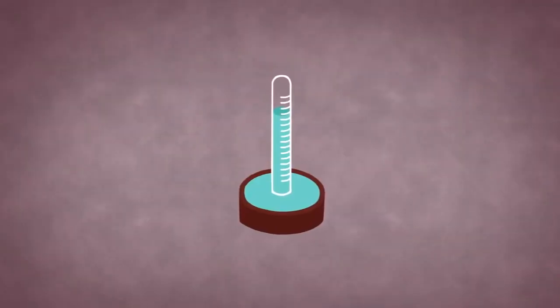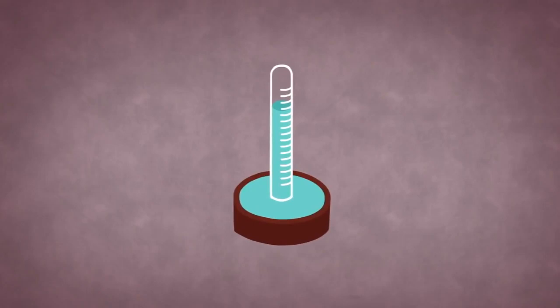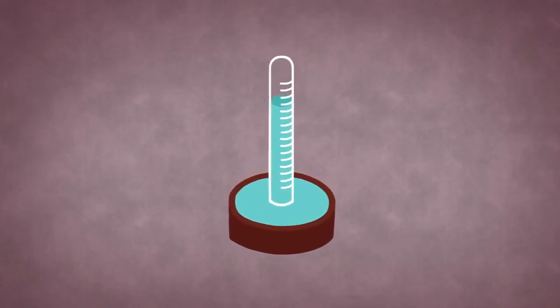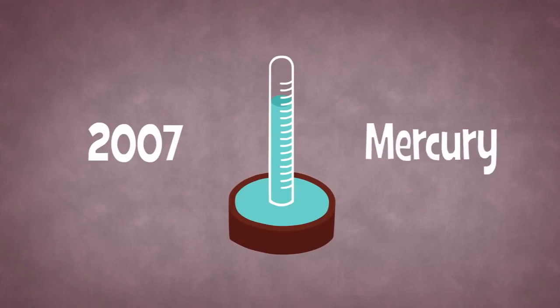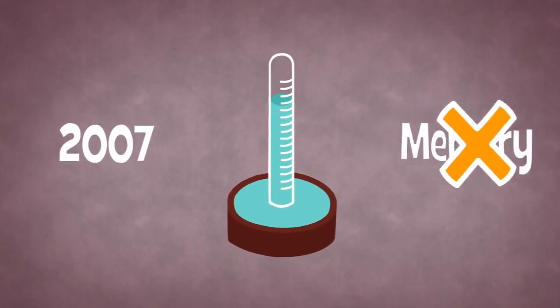Mercury barometers based on Torricelli's original model remained one of the most common ways to measure atmospheric pressure until 2007, when restrictions on the use of mercury due to its toxicity led to them no longer being produced in Europe.